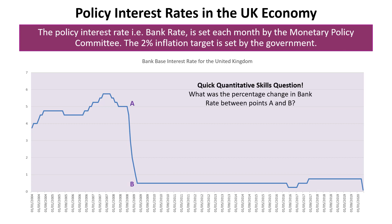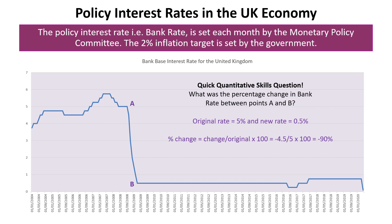We have a quantitative skills question: what is the percentage change in the bank rate between points A and B? The original rate was 5 percent and the new rate is 0.5 percent, so the percentage change is actually a 90 percent fall — minus 90 percent.